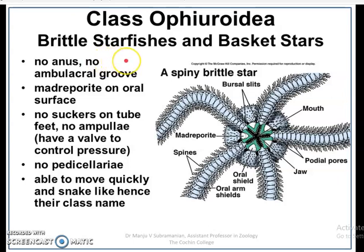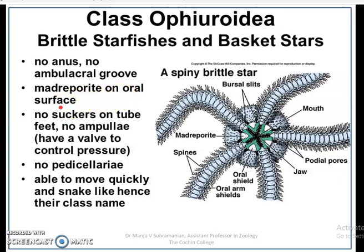In Ophiuroids, a good example is Brittle Star. It lacks an anus and ambulacral groove. The Madreporite, which is a basic part of the water vascular system, is present on the oral surface, whereas in Asteroids the Madreporite is present on the aboral surface.